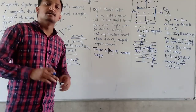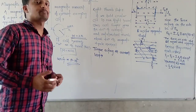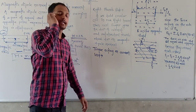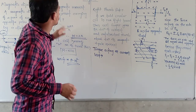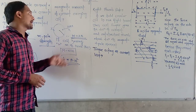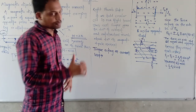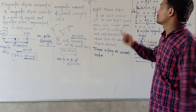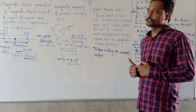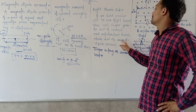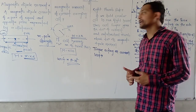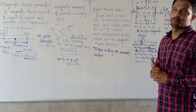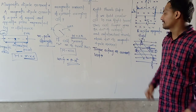How do you find the direction of magnetic dipole moment in that particular coil? We use the right-hand thumb rule. When we hold a circular coil in our right hand, the curl of the fingers shows the direction of current, and the outstretched thumb shows the direction of the magnetic dipole moment.